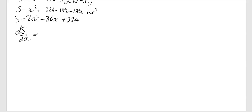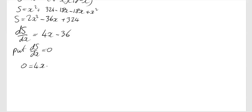Differentiating 2x² gives 4x. Differentiating −36x gives −36. We then put ds/dx equal to 0. So 0 equals 4x minus 36, which means 36 equals 4x, so x equals 9.